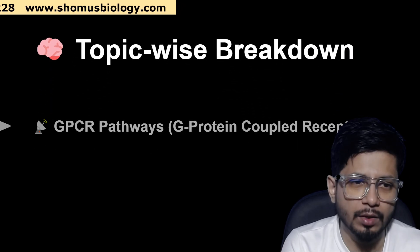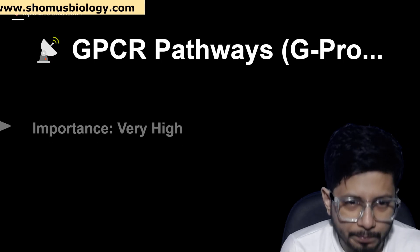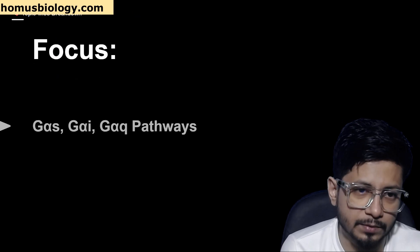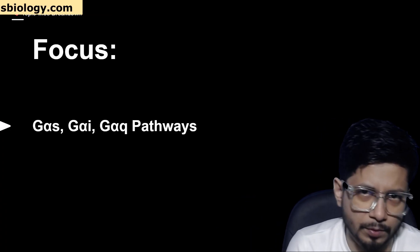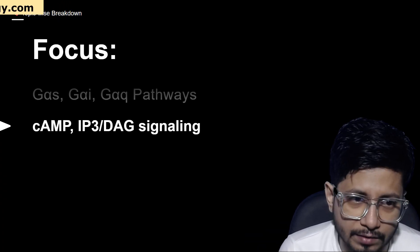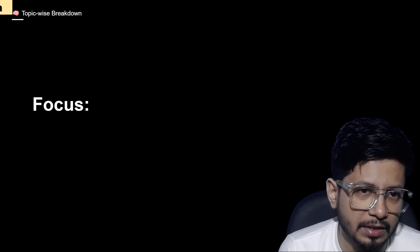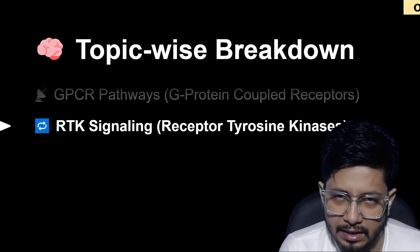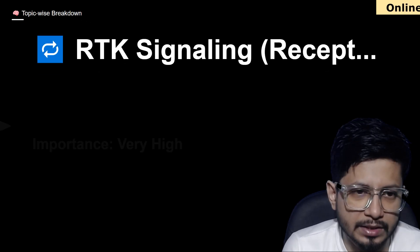For GPCR pathways, G protein-coupled receptors, the importance level is very high. The focus is on the different structures of the G protein-coupled receptor — Gα-s, Gα-i, and Gα-q pathways. Cyclic AMP-based pathways and IP3/DAG signaling pathways are equally important from GPCR pathways.